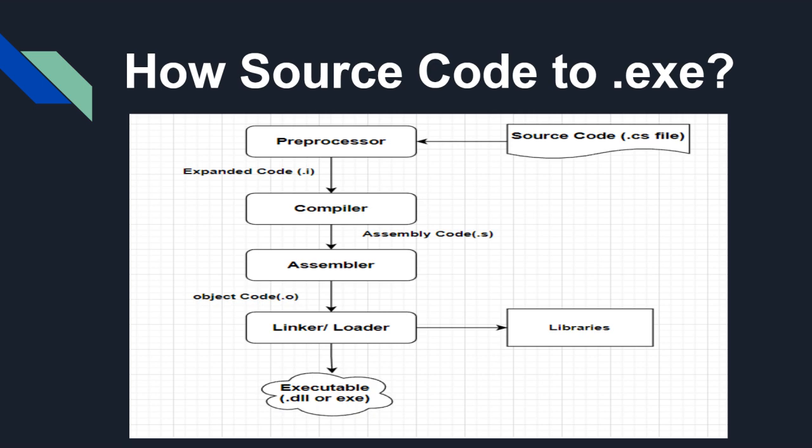This optimized code enters the compiler phase, which produces assembly code. The assembly code is then passed to an assembler, which generates object code in machine language — a computer-understandable language. This .obj file then enters the linker or loader stage, where the loader loads the necessary libraries and the linker links them with the object code to finally produce an executable .dll or .exe file.